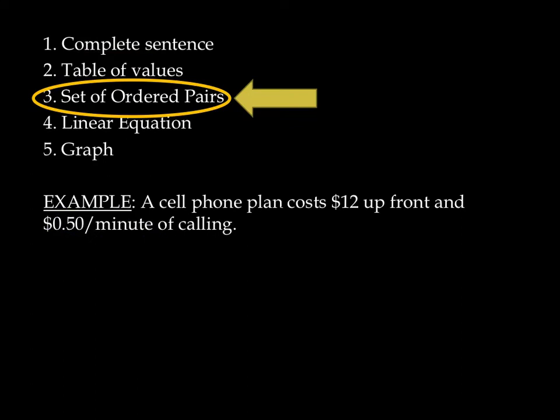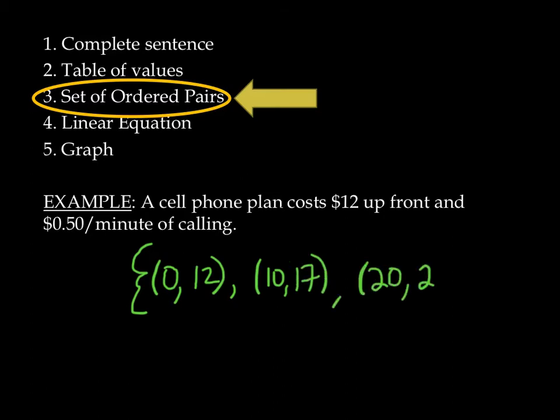The next kind of way of representing a linear function is called a set of ordered pairs. That's actually the same thing as that table. It says that if you do 0 minutes, it costs you $12. If you did 10 minutes, it'll cost you $17. At 20 minutes of talking, it'll cost you $22. Yada, yada. In fact, it's just another way of representing that table of values. This time as a set of ordered pairs.